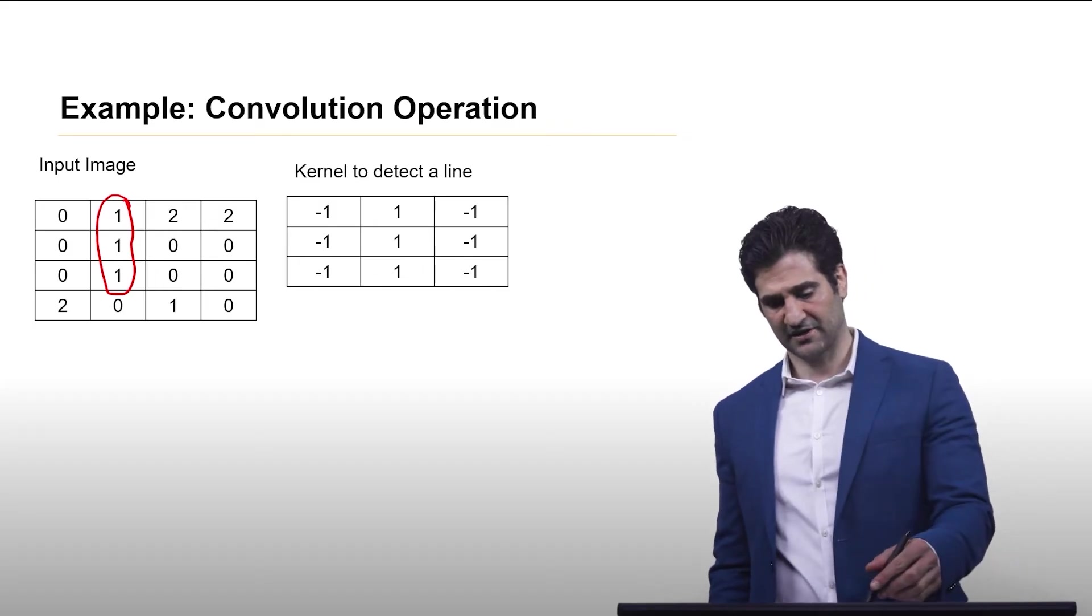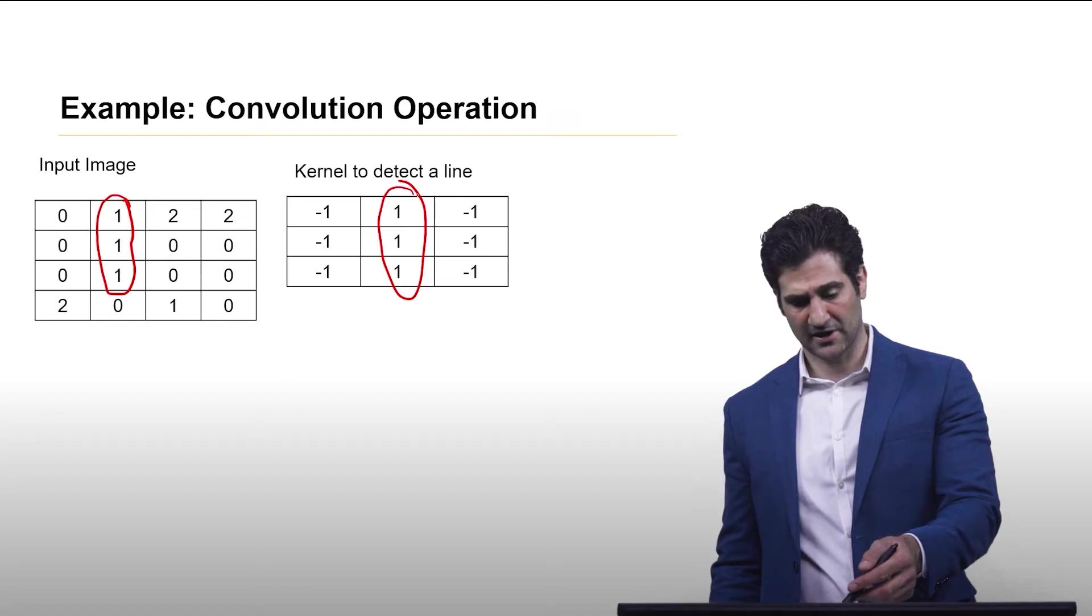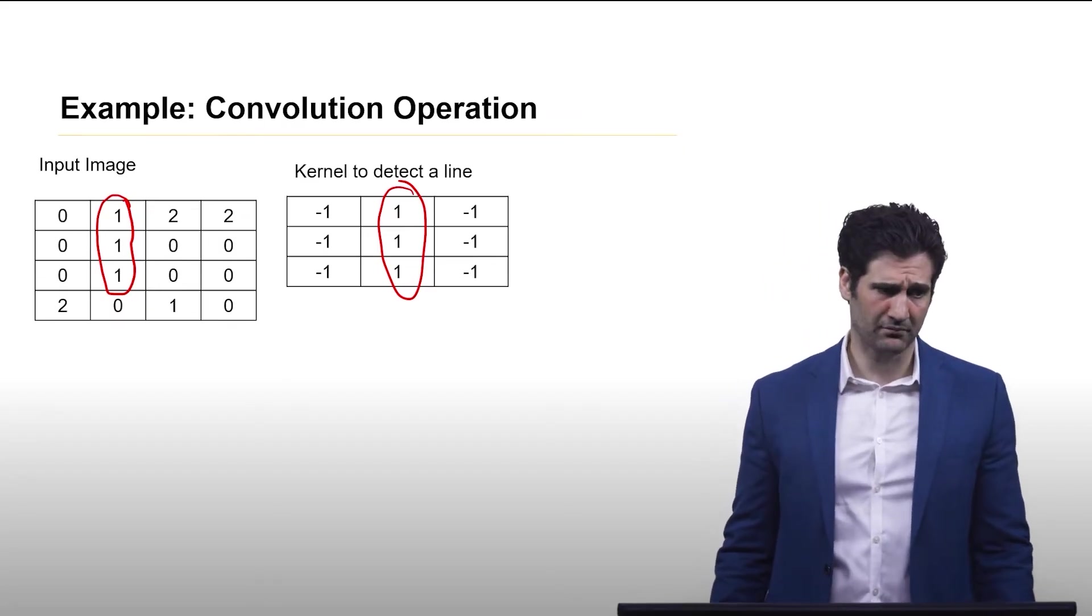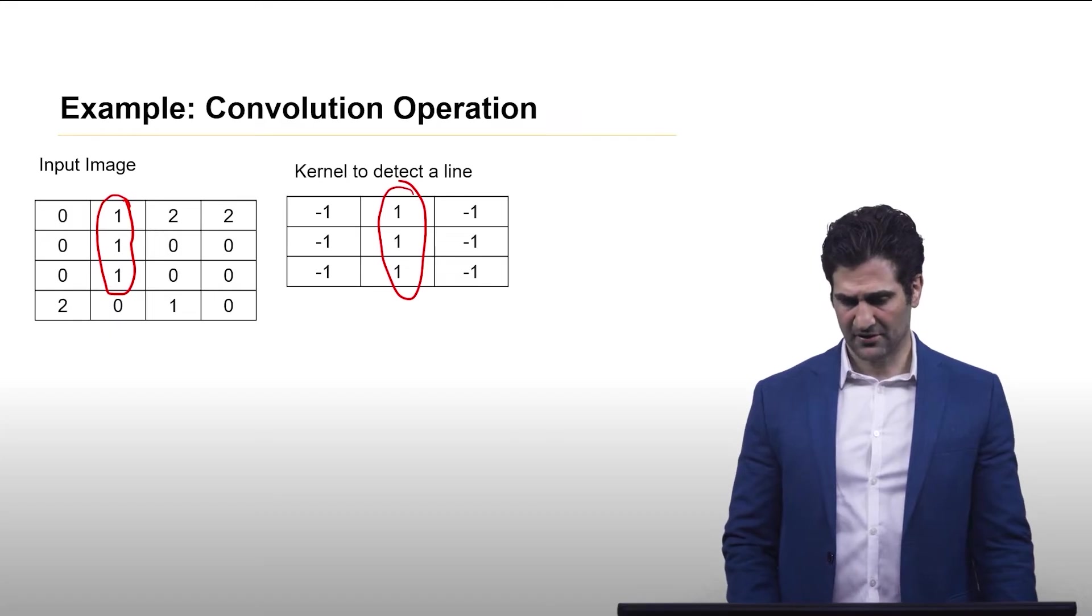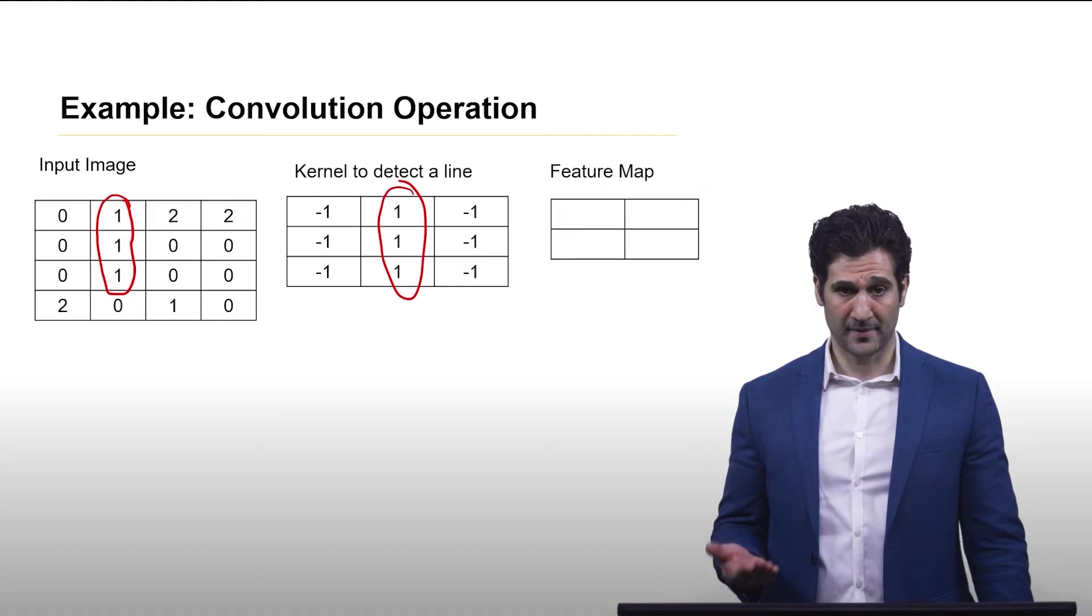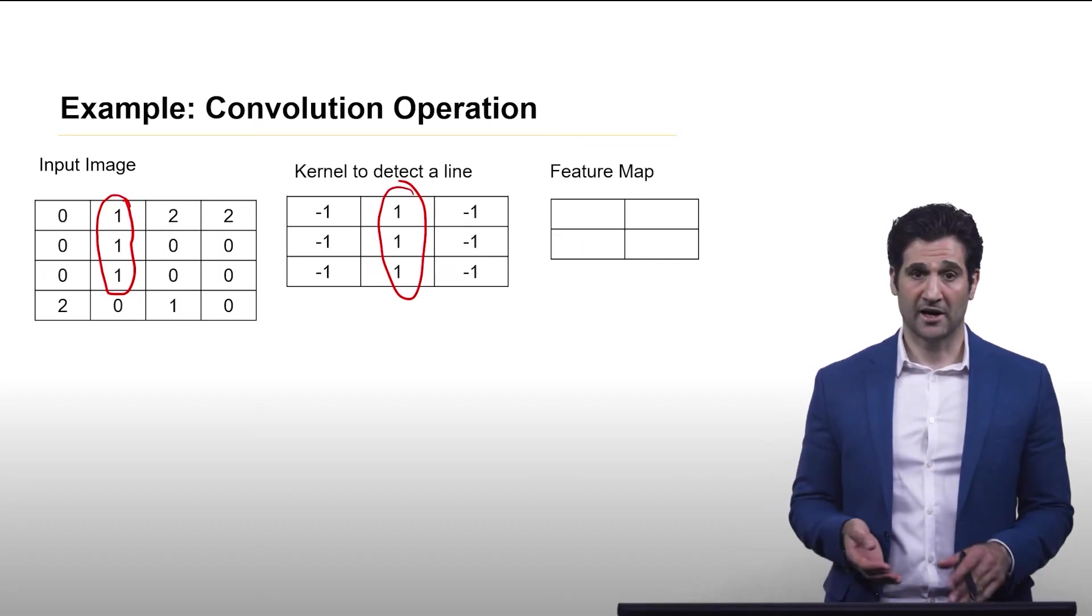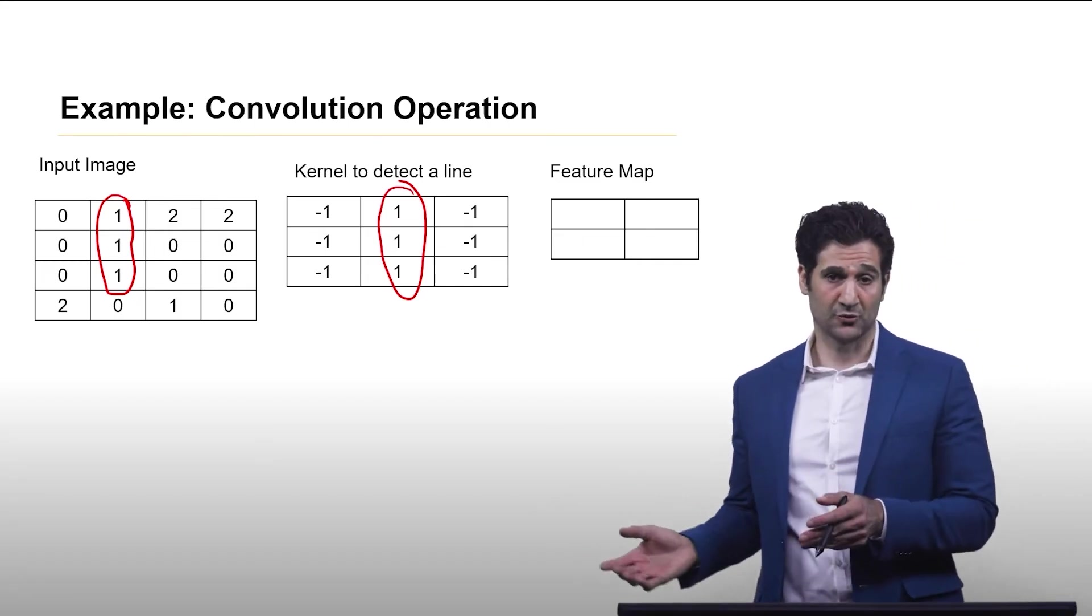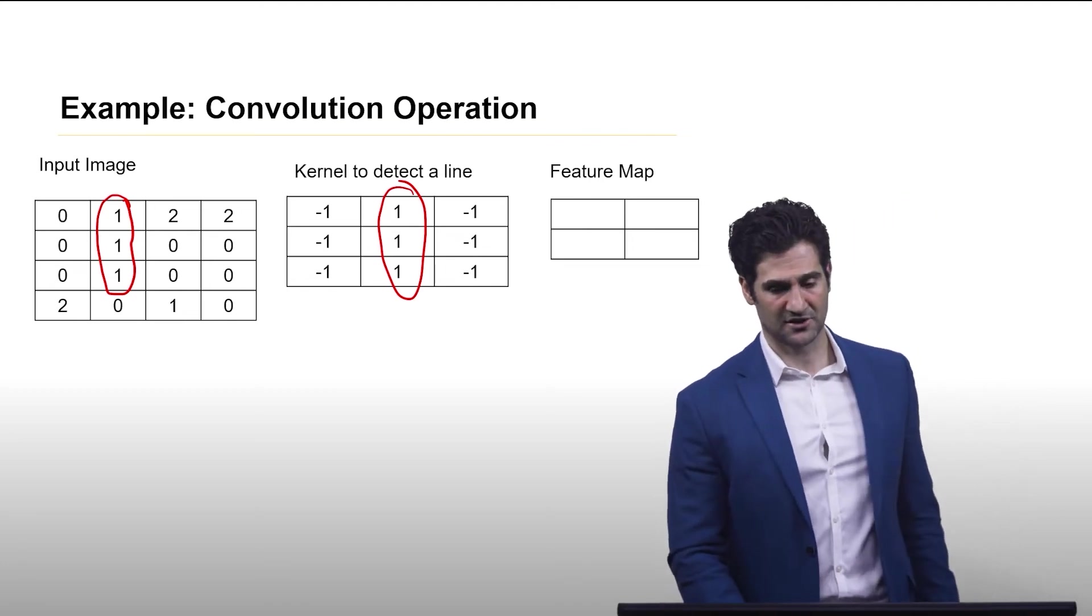This kernel is detecting a line because this is a line right here, a vector of ones. The feature map is the output of this and is determined by how many times we can place this kernel over top of the input image. You'll see this in a moment.